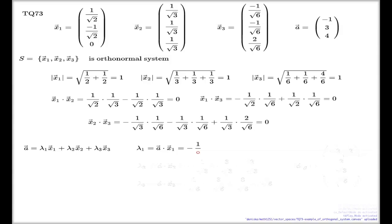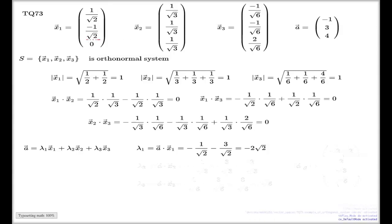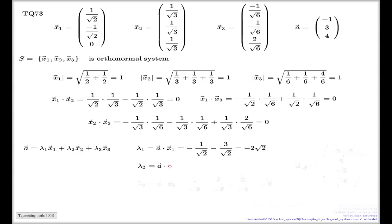In the case of x1, here's my dot product: negative 1 over root 2 and negative 3 over root 2 — that gives negative 4 over root 2, and we can cancel one of the twos. That's the first component lambda 1. The second component lambda 2 is again the dot product — A dot x2: it's negative 1 over root 3, then 3 over root 3.